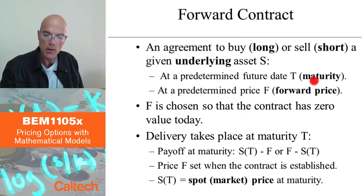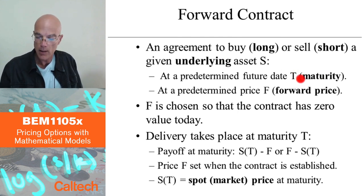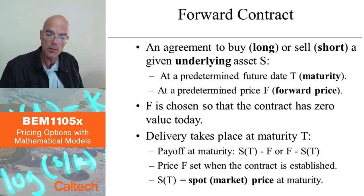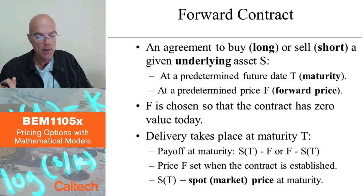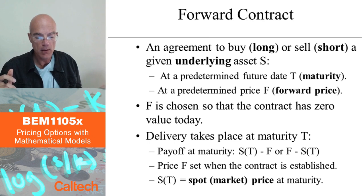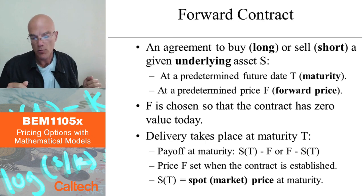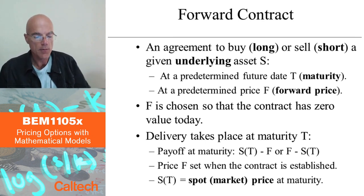The maturity or final time is always denoted capital T in this course, and the forward price is going to be denoted by capital F. With the forward price, you may either make money or lose money in the end, no matter whether you are long or short, depending on what the actual price will be six months from now.